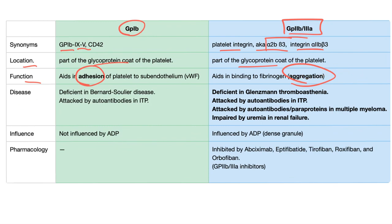GP1B is deficient in Bernard-Soulier syndrome. How about GP2B3A? It's involved in Glanzmann's thrombasthenia, ITP, paraproteinemia, and uremia — so thrombocytopenia, immune thrombocytopenia, paraproteinemia, and even uremia.